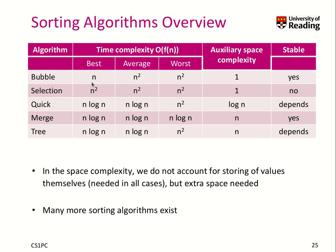Here is an overview of the sorting algorithms, showing their time complexity in best, average, and worst cases. Merge sort is O(n log n) across all cases, which is great. Quicksort is O(n log n) on average, which is good for practical reasons. We also see the auxiliary space complexity: bubble sort and selection sort need no extra space, while merge sort needs O(n). This illustrates the tradeoff between time complexity and space — faster algorithms sometimes need extra space. Nothing is for free in computer science. The stability property is also listed, and there exists a plethora of sorting algorithms to explore further.